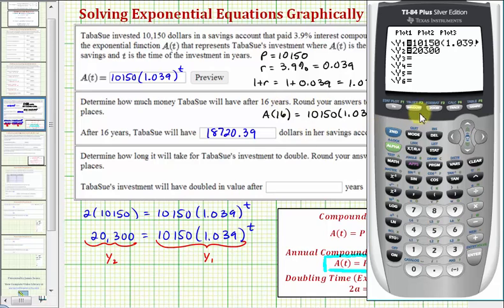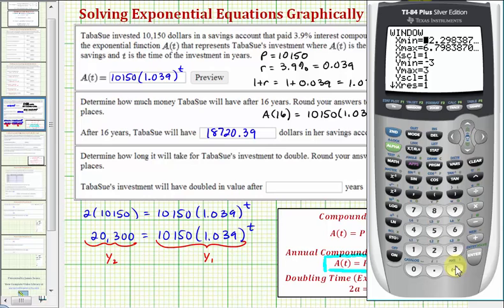So let's press window. Let's change the horizontal axis to go from, let's say, negative five to 25 by ones, that's fine. And let's set the Y minimum to, let's say, negative 4,000, enter, and the Y maximum to, let's say, 25,000. Now we could change the Y scale, but that's optional. Let's go ahead and press graph.